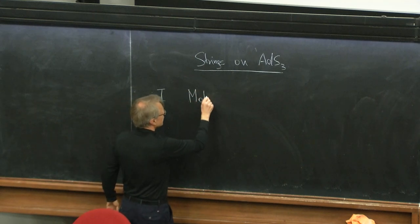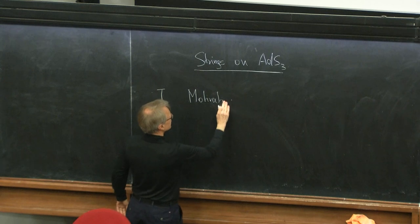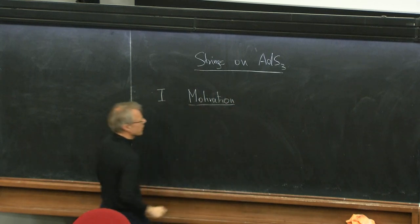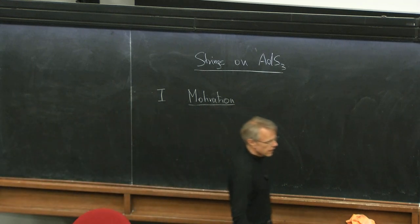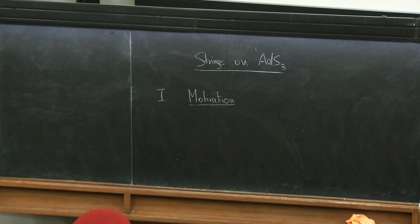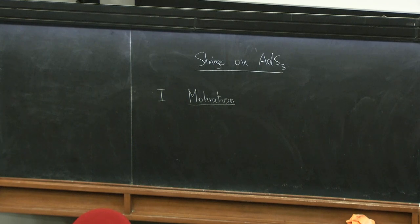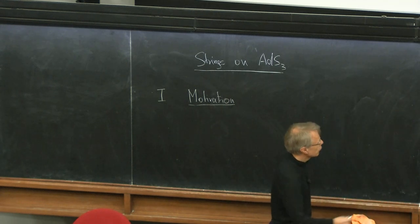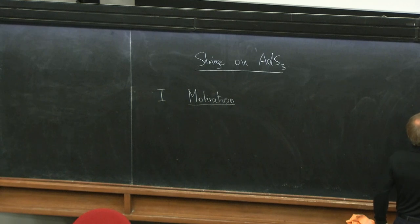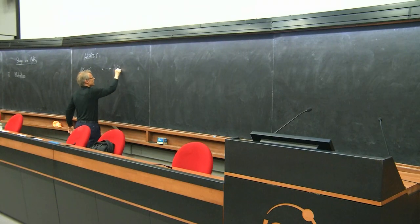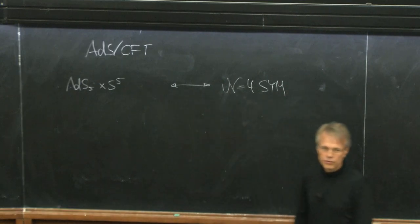I want to start by explaining the motivation, and then I'll give the plan of the lectures once I've explained what this is all about. The basic question is: we all know about the AdS/CFT duality, so let's review on a 30,000-foot perspective how it works, concentrating on the most familiar case — superstrings on AdS5 × S5, which is dual to N=4 super Yang-Mills. This is not AdS3, but we'll get there in a second.